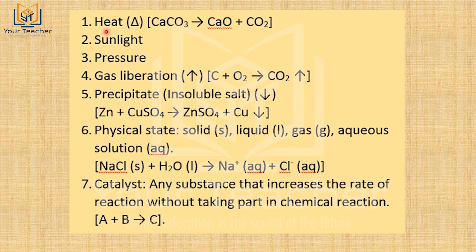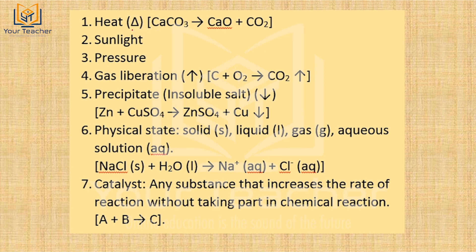Some reactions take place in the presence of heat. For example, calcium carbonate decomposes to form calcium oxide and carbon dioxide — this equation is written with heat indicated above the arrow. Some reactions occur at a particular temperature, such as 200 degrees Celsius. Other reactions occur in the presence of sunlight, for example, photosynthesis.